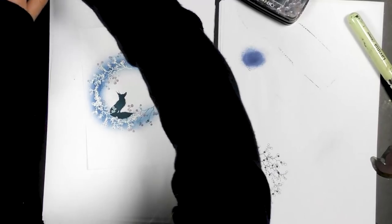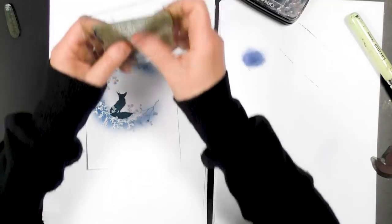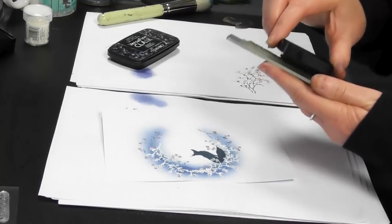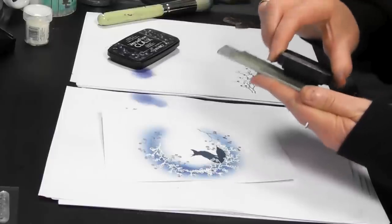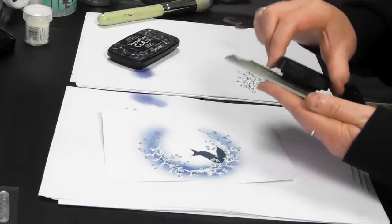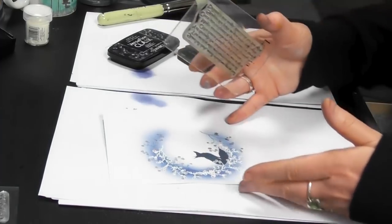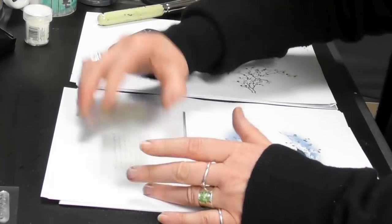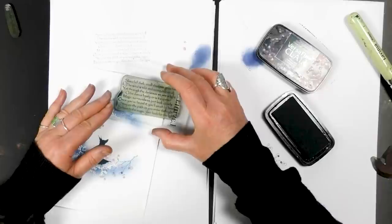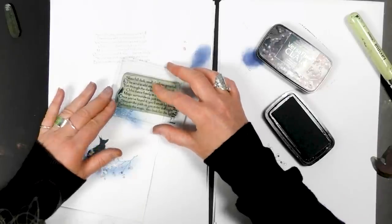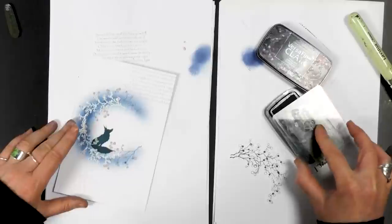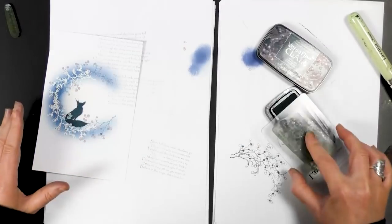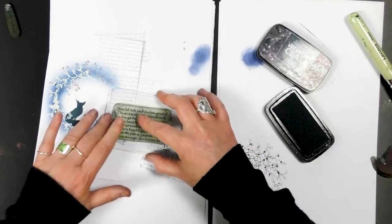Next thing, let's put some words on, a lovely verse here. So I'm inking that up in the Versafine, this is the Twilight. I only want it to be subtle.